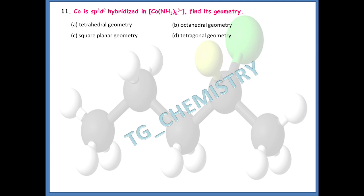The next question: cobalt is sp3d2 hybridized in [Co(NH3)6]³⁺. Find the geometry of this coordination complex. The right answer is octahedral geometry. This complex resembles an MA6 type compound, and sp3d2 hybridization is consistent with octahedral geometry.